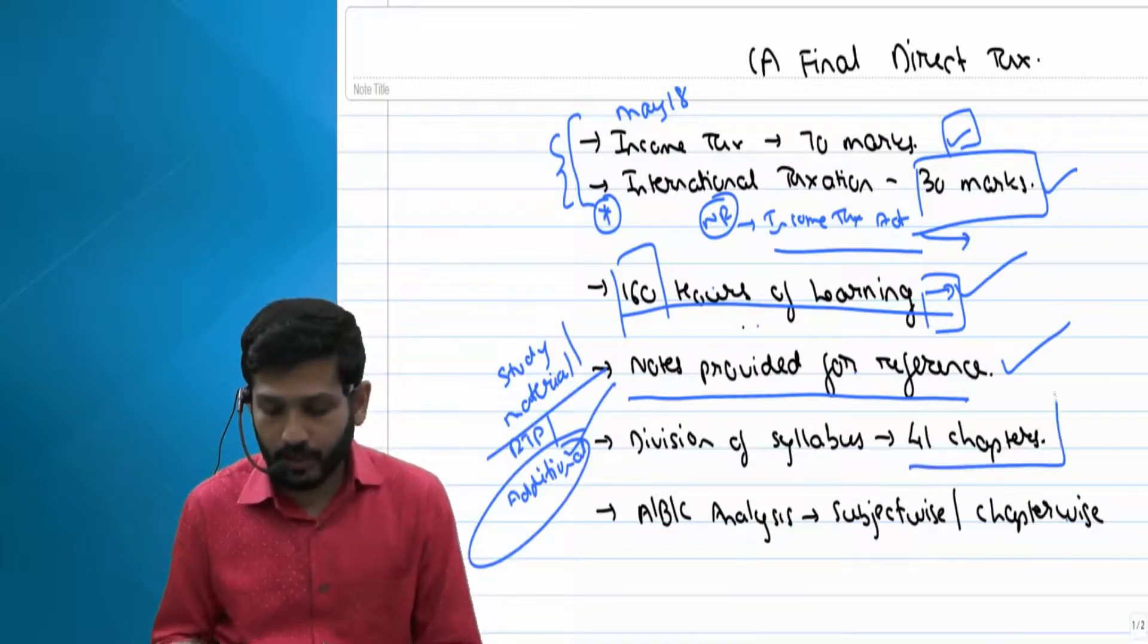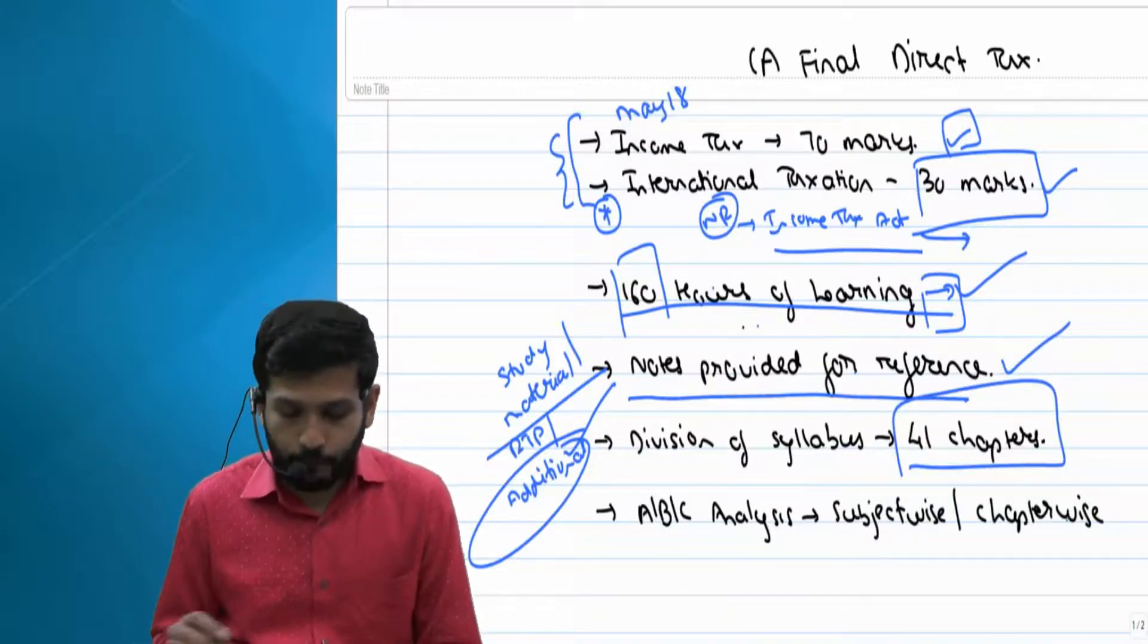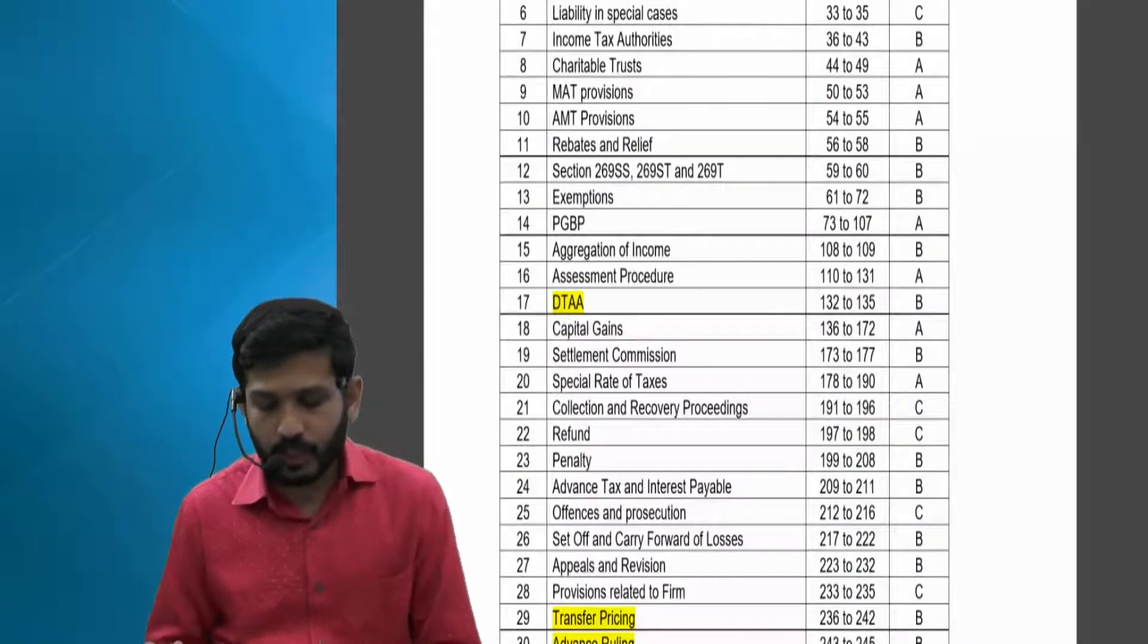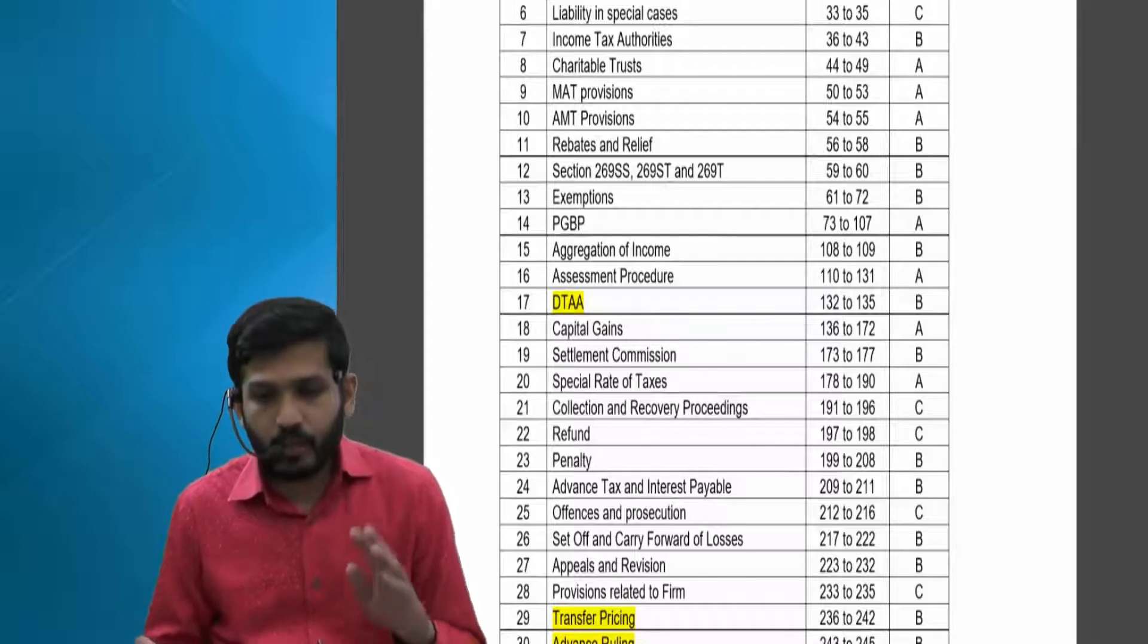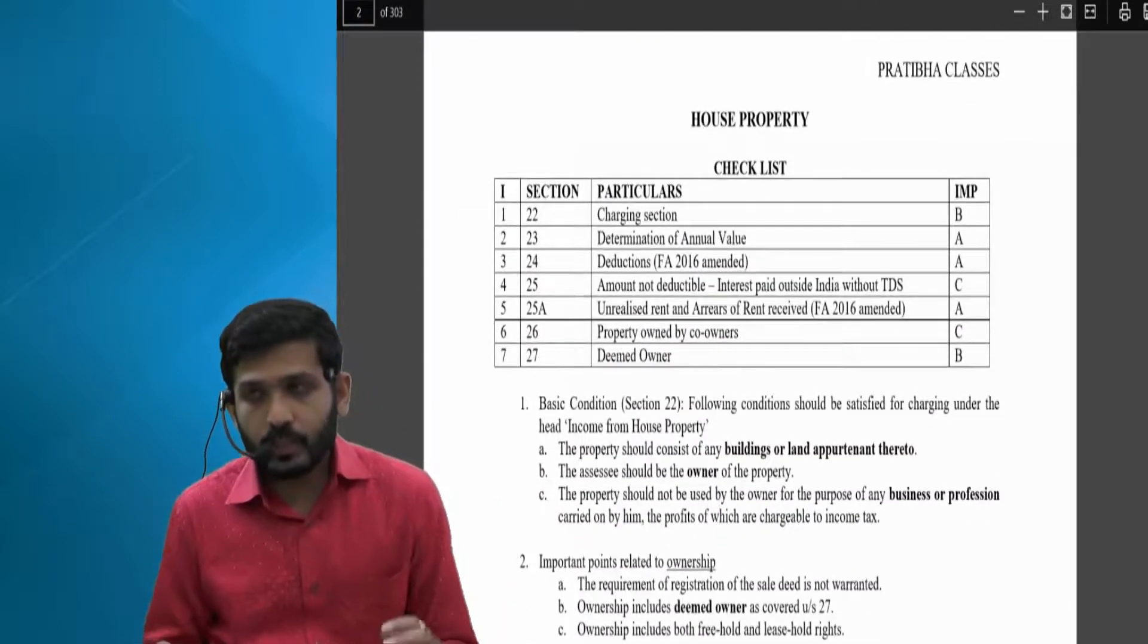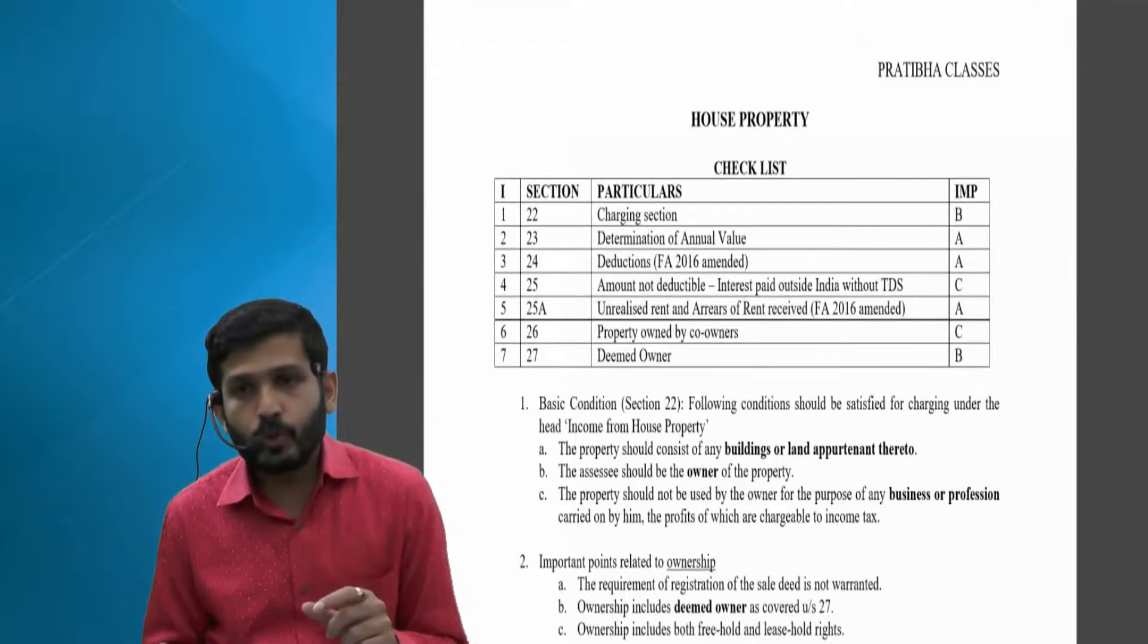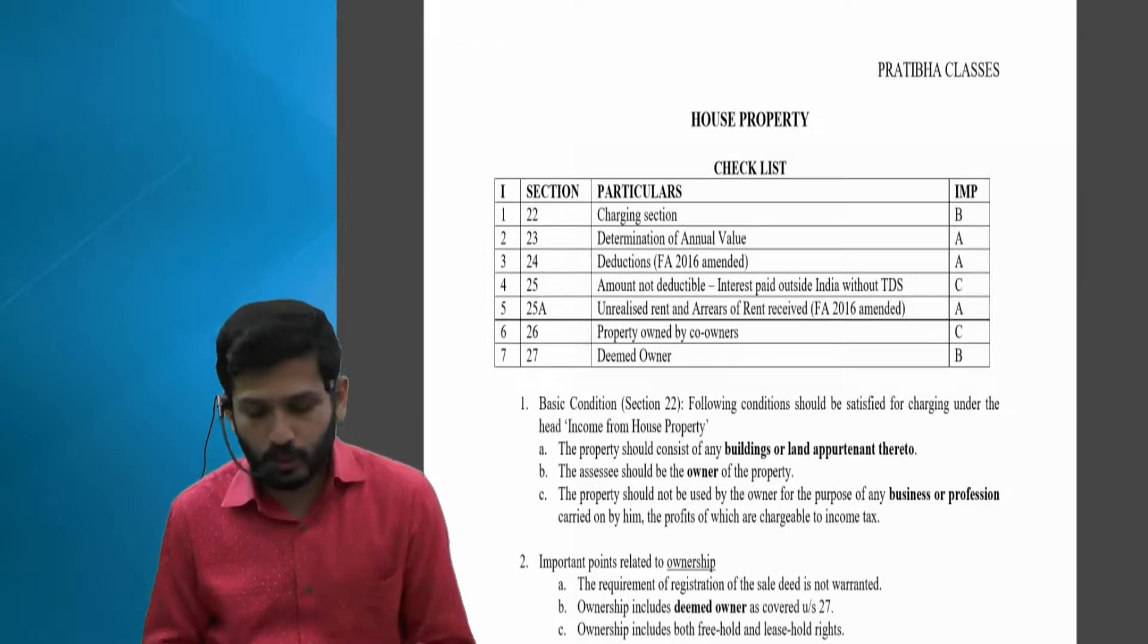As I have already told you, I have divided this syllabus into 41 chapters. So you have to study these 41 chapters. If you have noticed one thing, every chapter has been categorically analyzed as ABC, that is as per their importance. And further, when you will go to every chapter, section-wise I have tried to give you ABC analysis of every section, so that it will be helpful for you to concentrate upon most important sections first and then to go to least important.